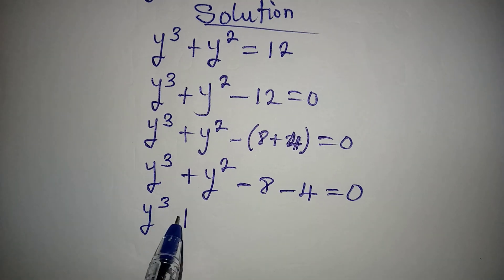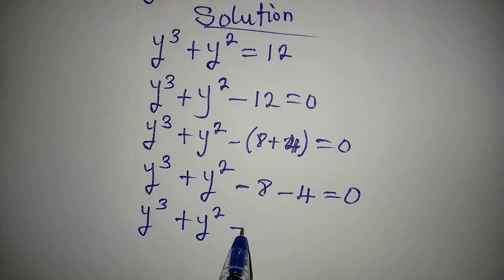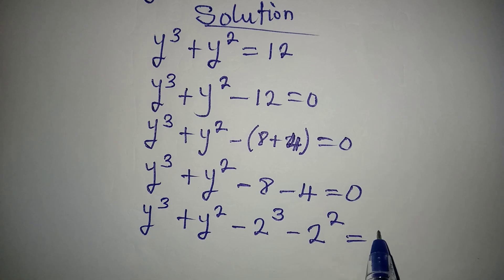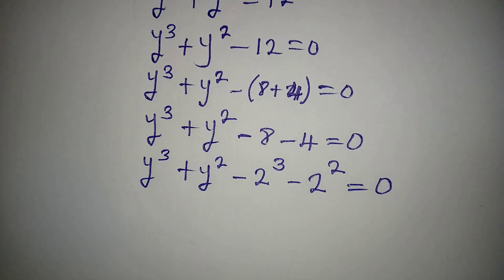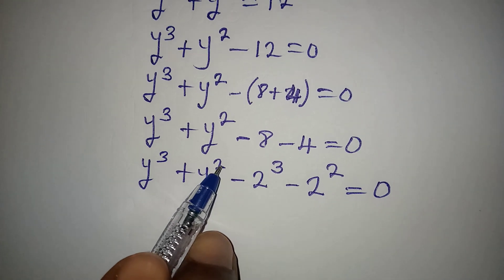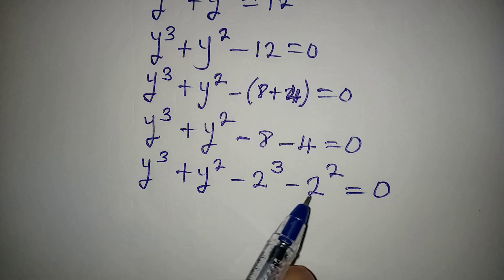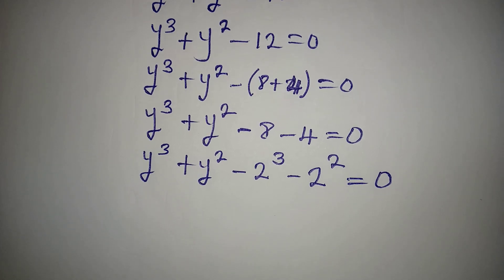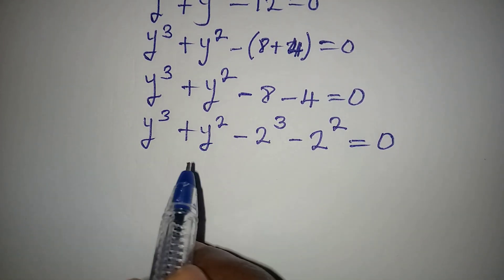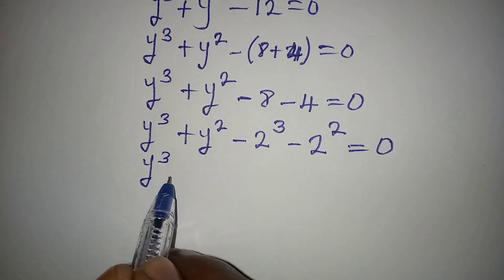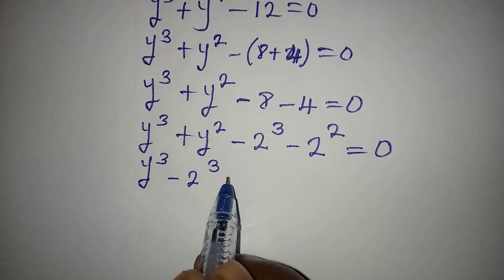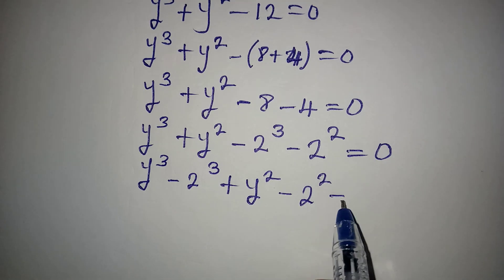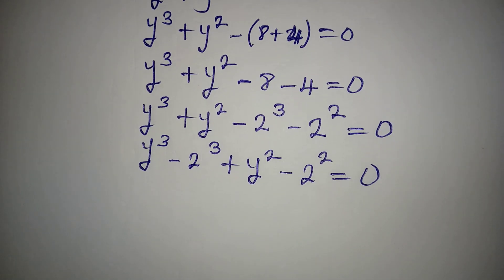From here, y to the power of 3 plus y to the power of 2 minus 2 to the power of 3 minus 2 to the power of 2 is equal to 0. I am doing this because I have y to the power of 3 and y to the power of 2, so I have to make them have the same powers and the same bases as what I have in terms of y. Then we regroup so that we have y to the power of 3 minus 2 to the power of 3, then plus y to the power of 2 minus 2 to the power of 2, equal to 0.